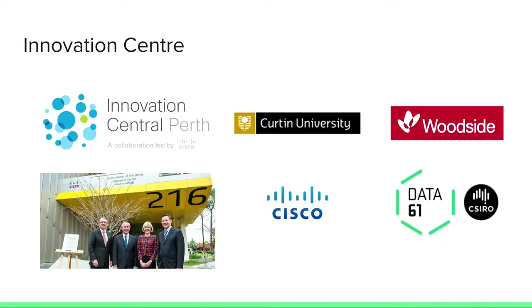We're also affiliated with the Innovation Centre in Perth. It was previously called the Cisco Internet of Everything Innovation Centre, but it's really a partnership between four main parties: Curtin University, Woodside Petroleum, Cisco, and Data61 and CSIRO. This is an old picture of our building with our Vice Chancellor and the Premier at the time.